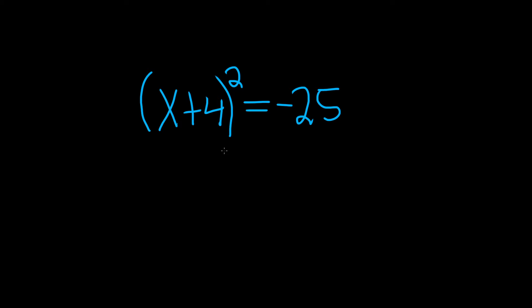In this problem we're being asked to solve this equation for x using something called the square root property. So the square root property basically says if you have a variable, which I'll call x, and it's squared and it's equal to a number,